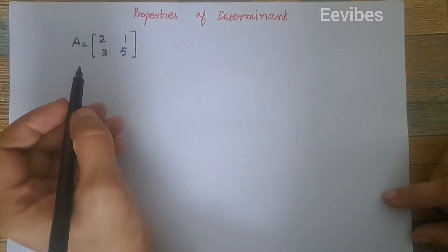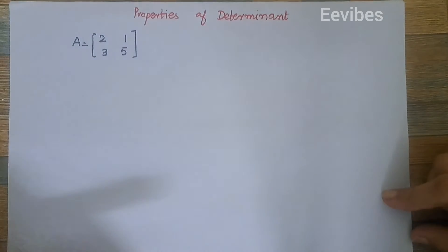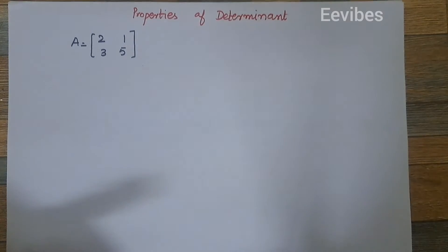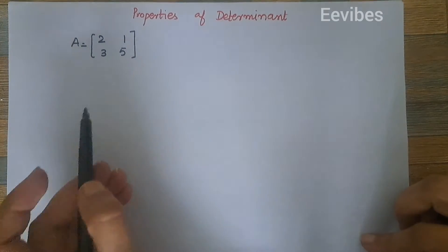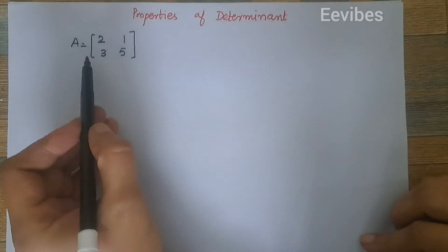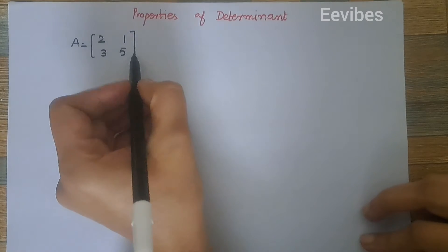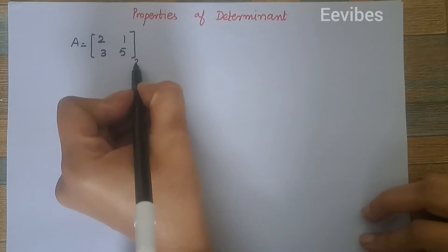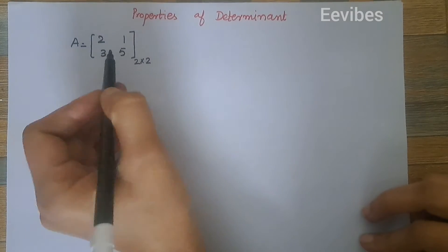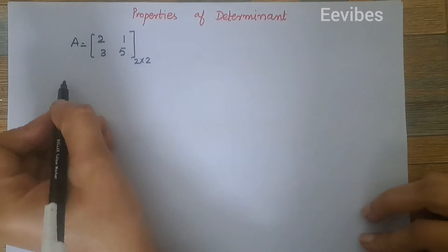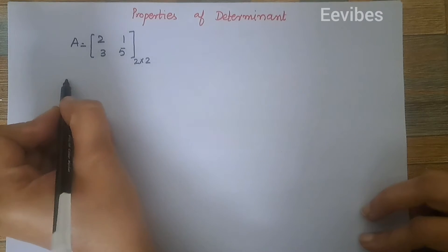Hi everyone, this is Asma Mushtaq from the Double E Vibes. In this video lecture I am going to explain some of the properties of the determinant and prove those properties by using a matrix A of order two by two. Given that A is equal to [[2, 1], [3, 5]], let's find the determinant of A.